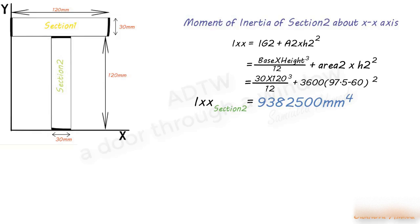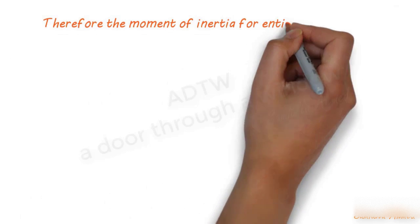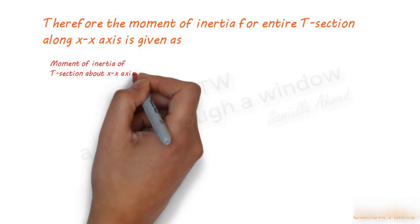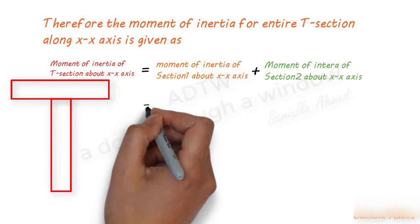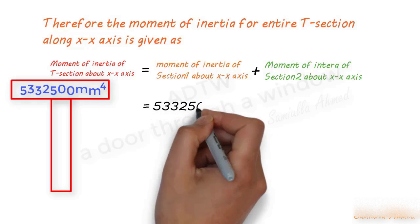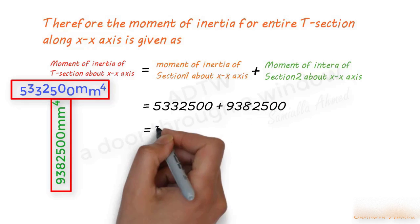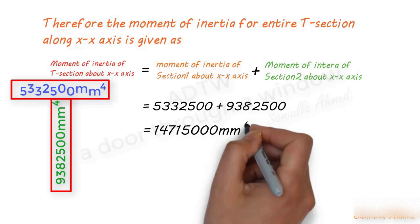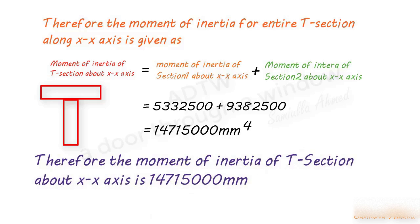Since we found the moment of inertia of Section 1 and Section 2 about the X-axis, we can now find the total moment of inertia of the T-section about the X-axis. It equals 5,332,500 + 9,382,500 = 14,715,000 mm⁴. Therefore the moment of inertia of the T-section about the X-axis is found.